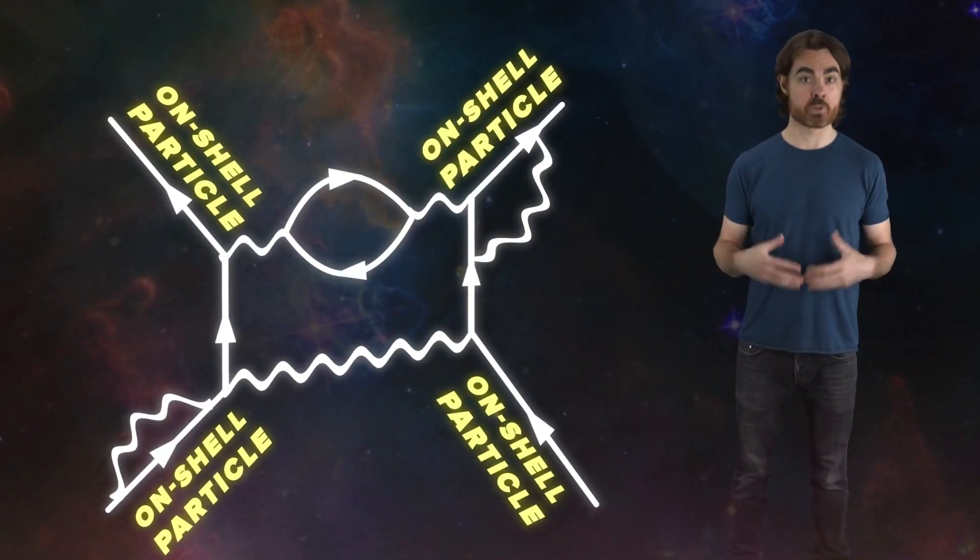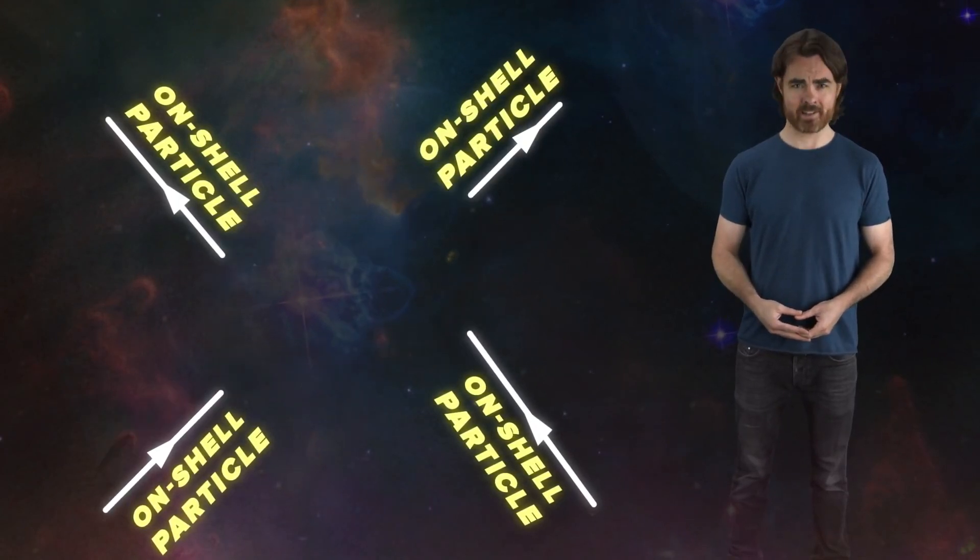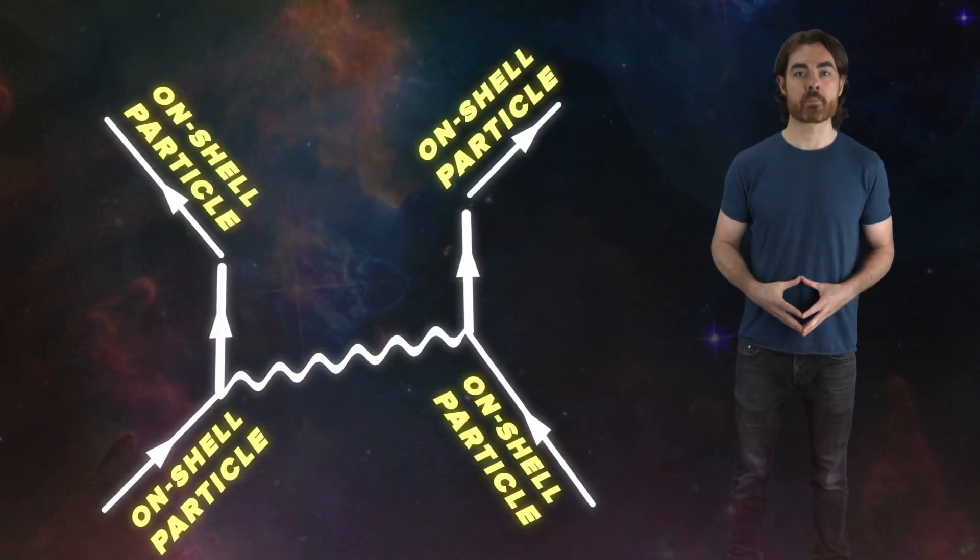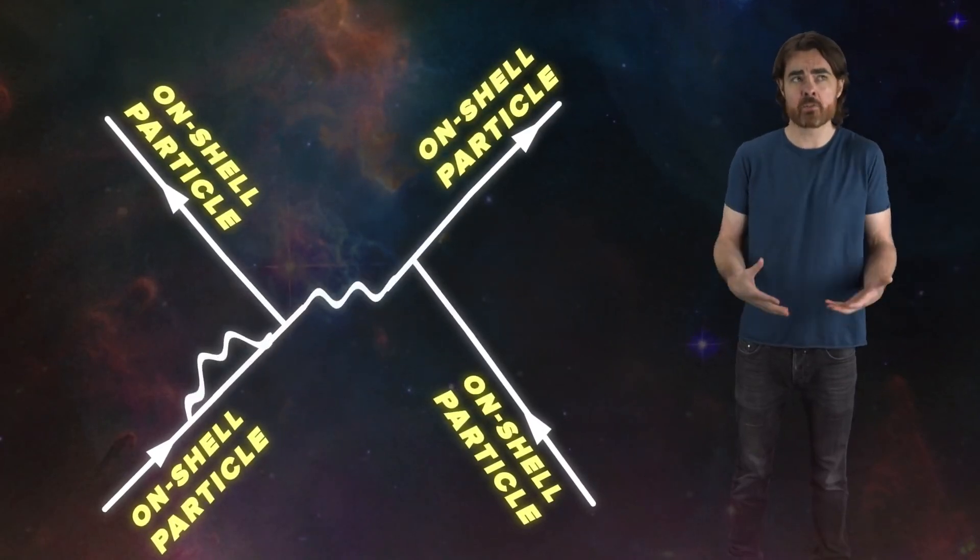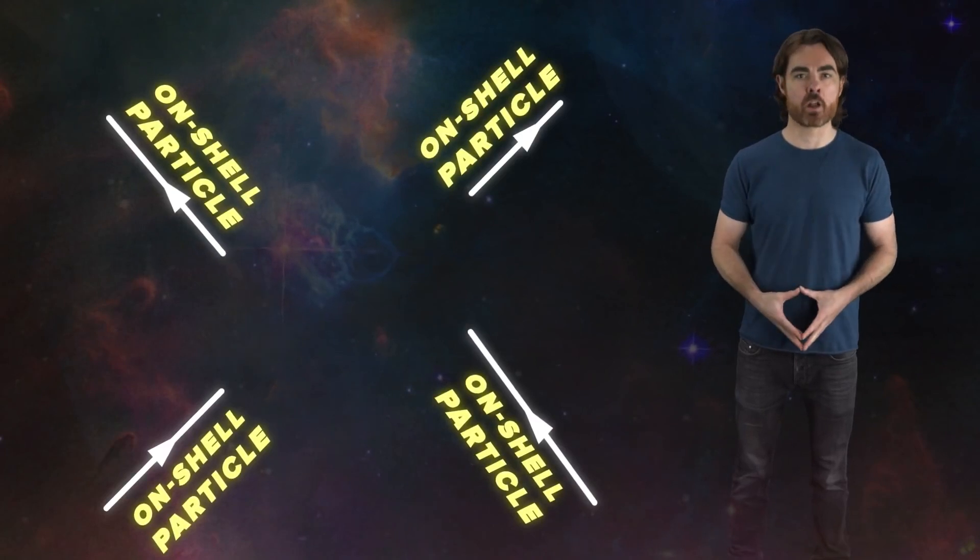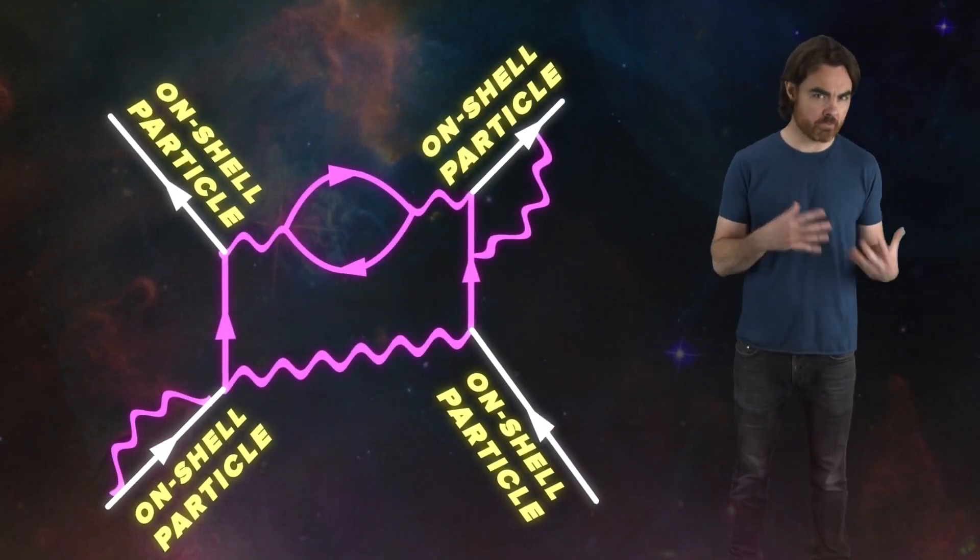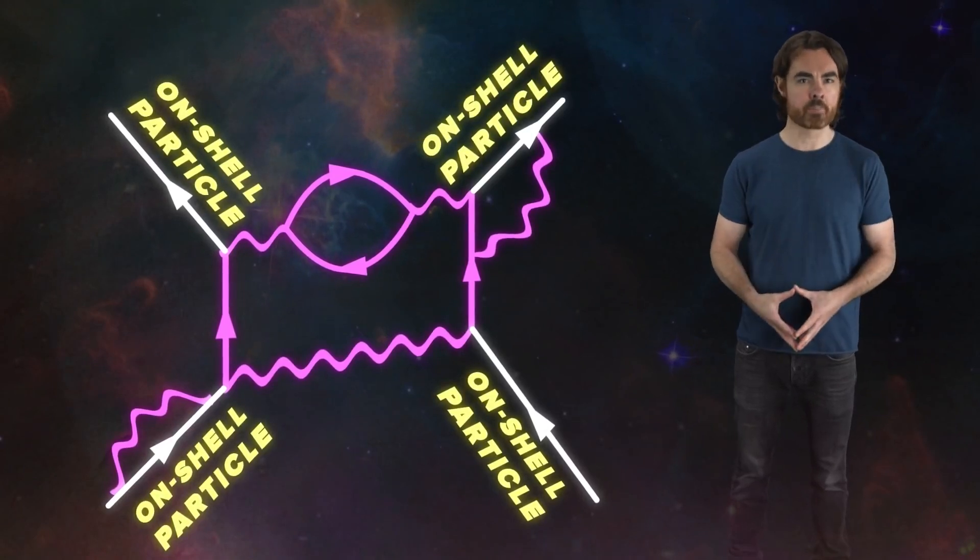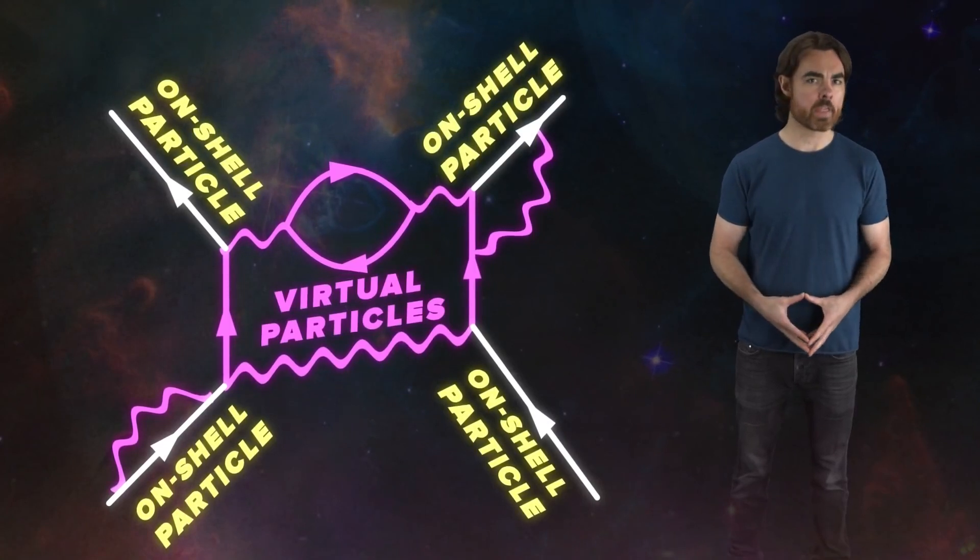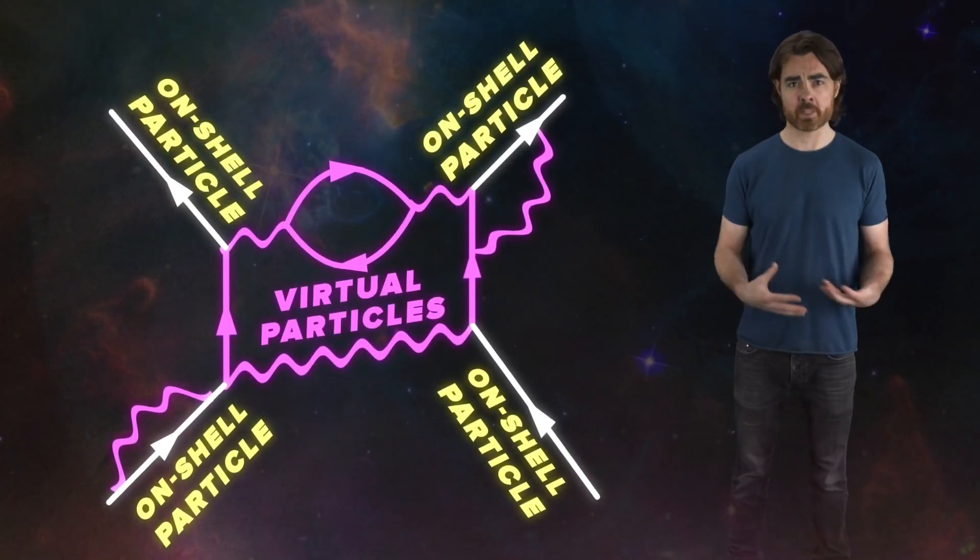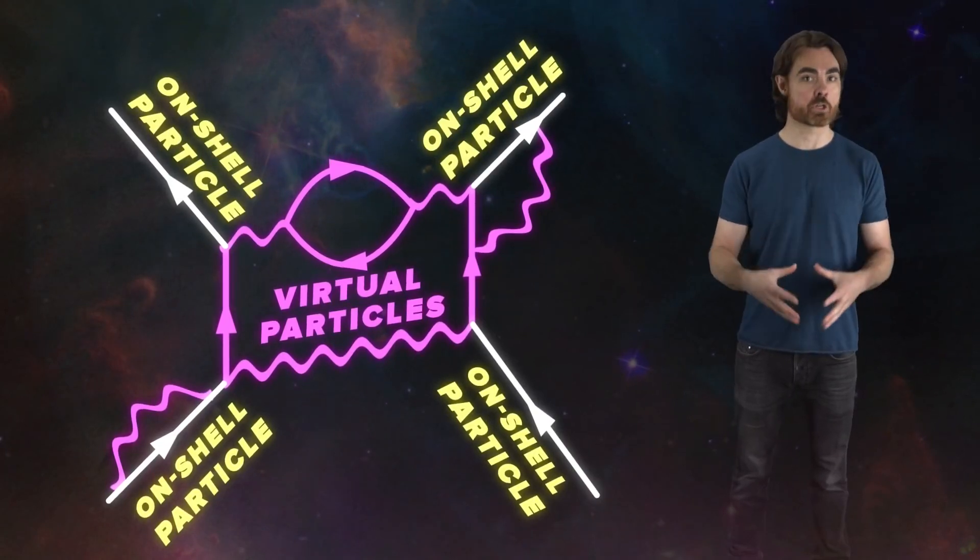On the other hand, everything that happens between the ingoing and outgoing tracks has questionable reality. Each possible diagram that results in the same ingoing and outgoing particles is a valid part of the possibility space for that interaction. The particles that have their entire existence between vertices within the diagram, but don't enter or leave, are called virtual particles. Their correspondence to anything resembling real particles is debatable. They are also, by definition, unmeasurable.